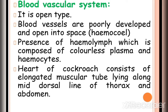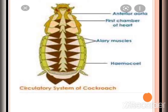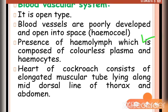The next system is the blood vascular or circulatory system. Cockroaches have an open circulatory system — a poorly developed system in which blood vessels open into a central cavity called the haemocoel. The blood, called haemolymph, is composed of colorless plasma and haemocytes.